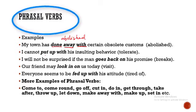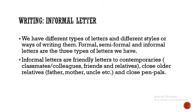'I cannot put up with this insulting behavior.' Here 'up' is one particle, 'with' is another, and 'put' is the verb. It means to tolerate. So you can say 'I cannot tolerate this insulting behavior.' The examples are numerous.